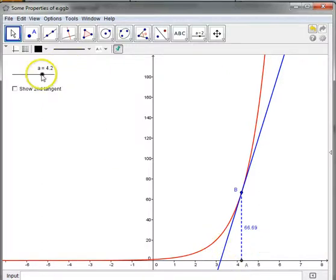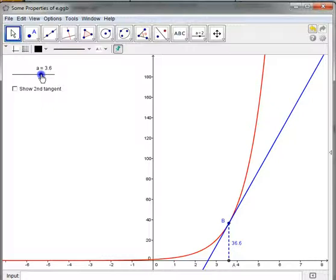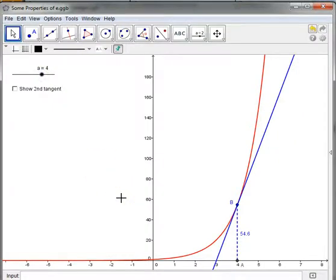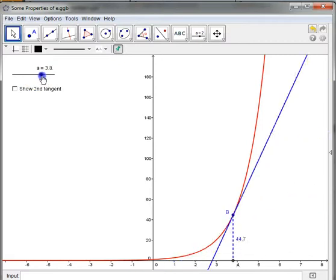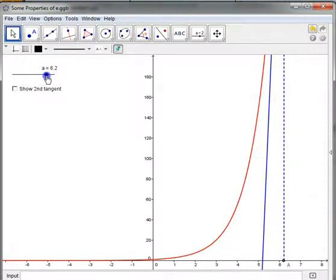So now what I'm going to do is I'm going to change this. There you go. You can see when A is equal to 4, the value of your function was what you just said, 54.6. So what I'm going to do is I'm going to change it to 1.5. If I change it to 2, it becomes 7.39. I can increase this to much higher. Let's say 6.